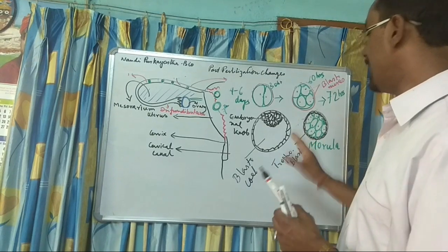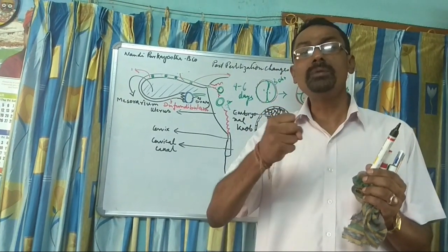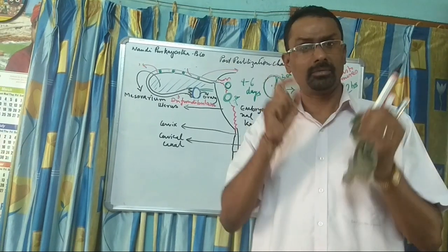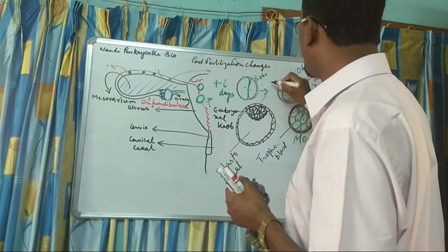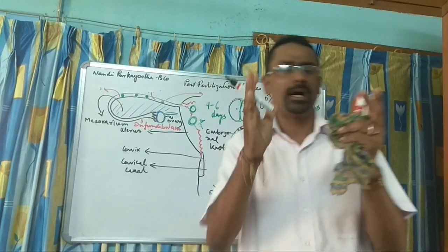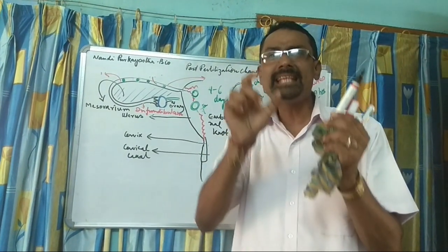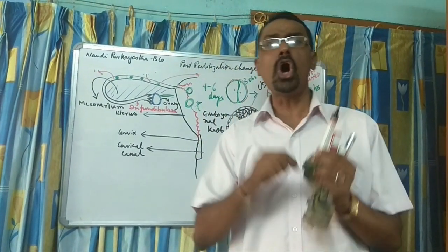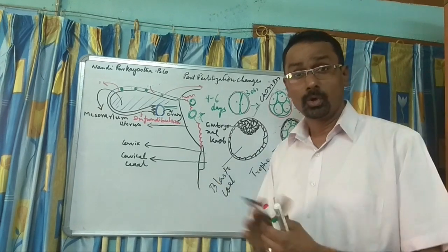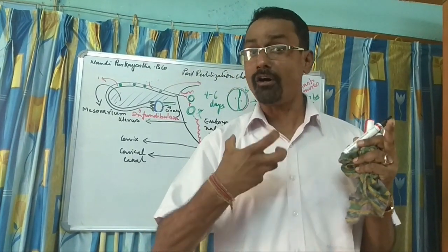The trophoblast does one most important thing: it gives out a rudimentary wall formation called Chorion — C-H-O-R-I-O-N. The trophoblast does not participate in the direct formation of the embryo, but it plays an important role in forming chorion. Chorion leads to the formation of the placenta, which unites with that of the mother, and chorion cells produce hormones important in the development of the embryo.